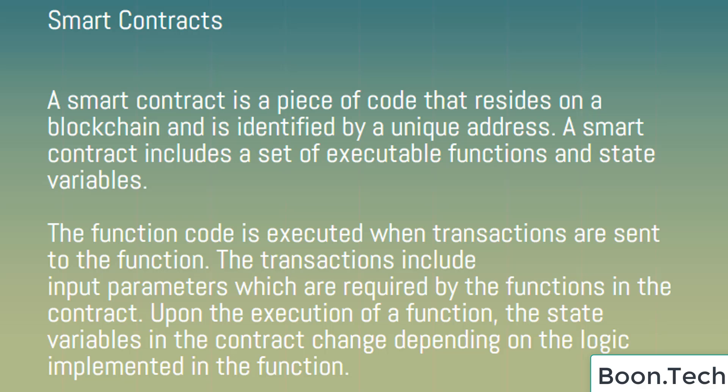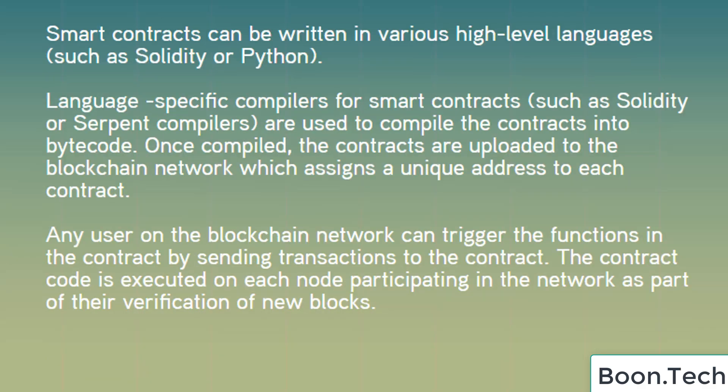Upon the execution of a function, the state variables in the contract change depending on the logic implemented in the function. Smart contracts can be written in various high-level languages such as Solidity or Python. Language-specific compilers for smart contracts, such as Solidity or Serpent compilers, are used to compile the contracts into bytecode.